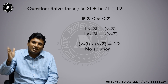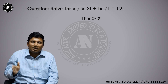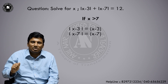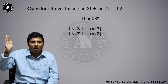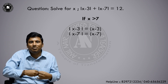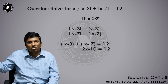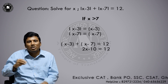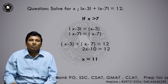Next case: x is greater than 7. If x is greater than 7, mod(x - 3) becomes (x - 3) and mod(x - 7) becomes (x - 7). So the equation becomes (x - 3) + (x - 7) = 12, giving 2x - 10 = 12, then 2x = 22, so x = 11.